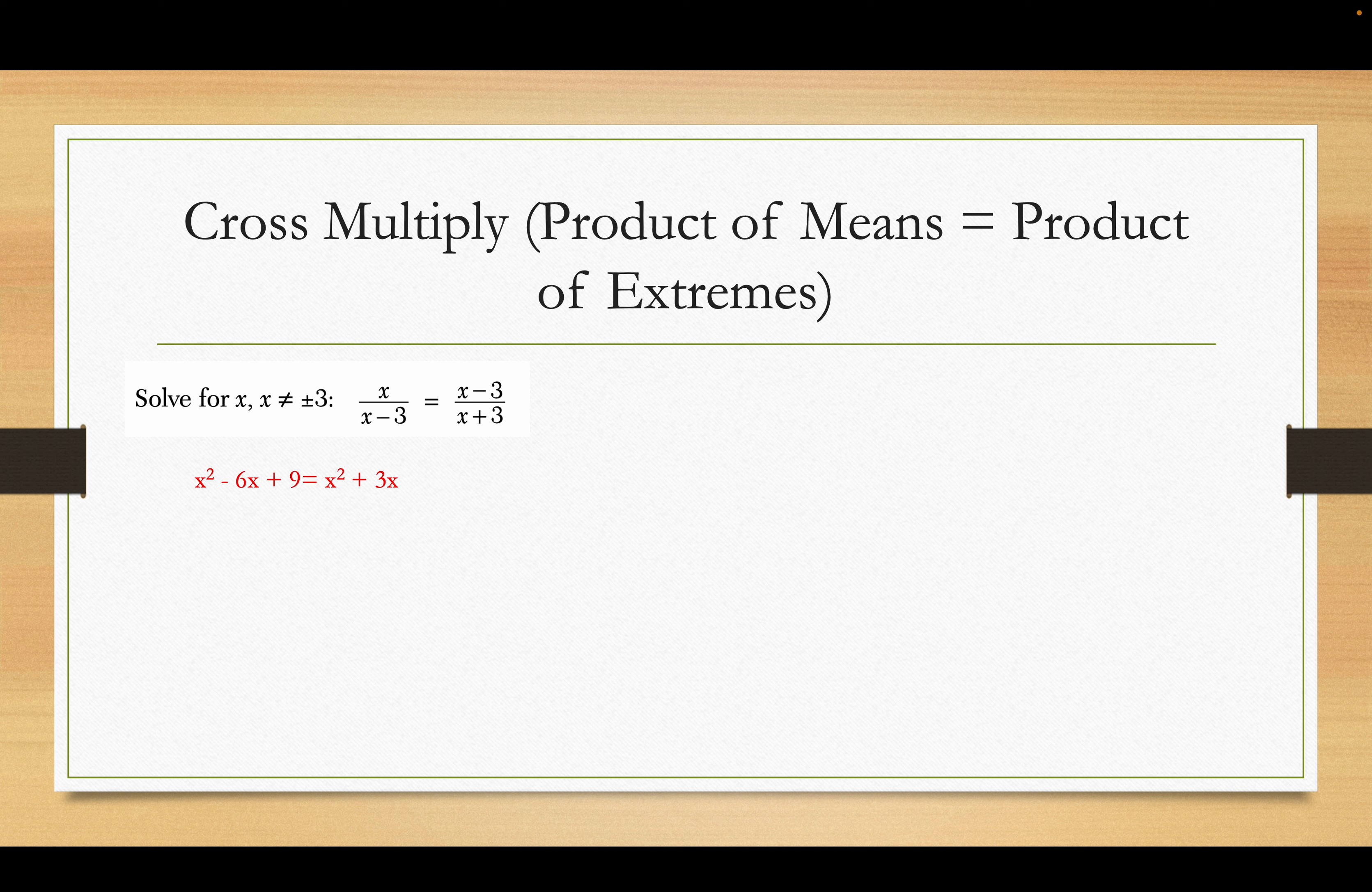Cross multiplying. I get, x minus 3 times x minus 3 is x squared minus 6x plus 9. I did it a little quickly. And x times x plus 3 is x squared plus 3x. So, this is the same question as the previous question. I'm just, for some reason I had, I forgot to take out that other slide.